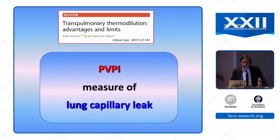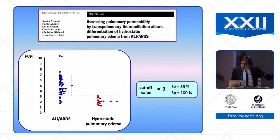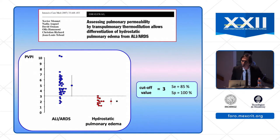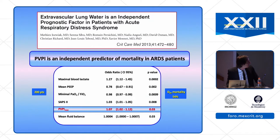PVPI can help distinguish between ARDS and hydrostatic pulmonary edema. In a study we performed, we could distinguish between ARDS and cardiogenic pulmonary edema and found a cutoff value of 3 with good sensitivity and specificity, confirmed by other studies. In ARDS patients, PVPI was found to be an independent predictor of mortality.